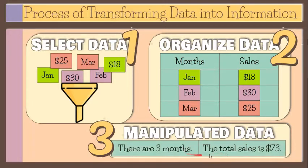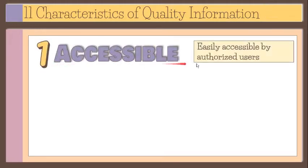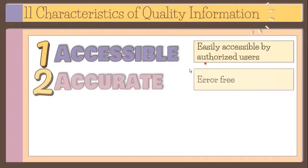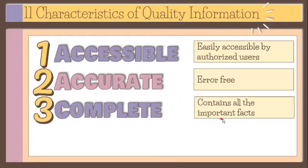The quality of a decision is based on the quality of the information used to reach that decision. Information should be easily accessible by authorized users so they can obtain it at the right time. Information should be error-free — when inaccurate data is fed into the process, inaccurate information will be produced. Complete information contains all the important facts. For example, a ticket reservation system that does not show seats that were already sold does not have complete information.